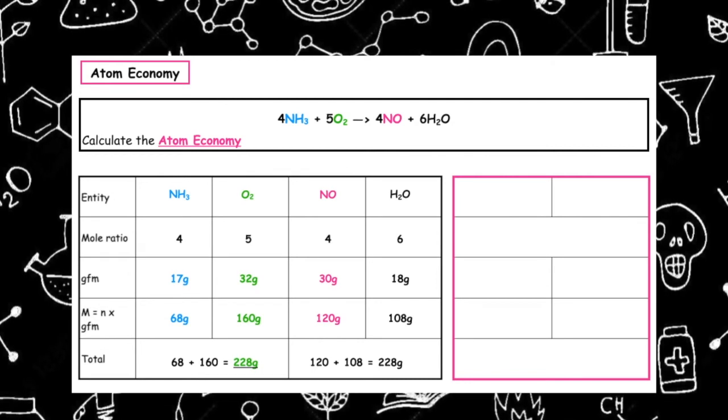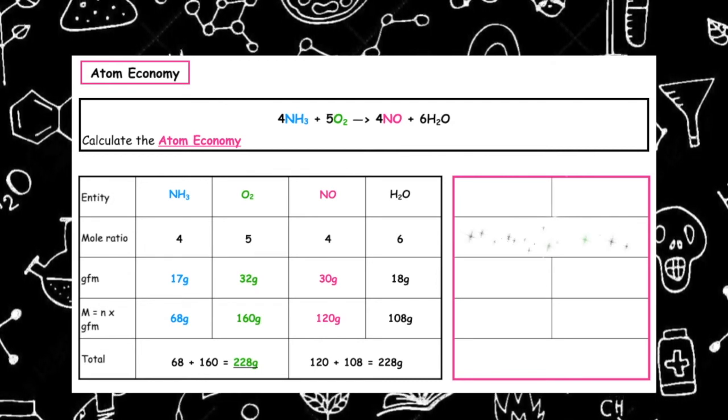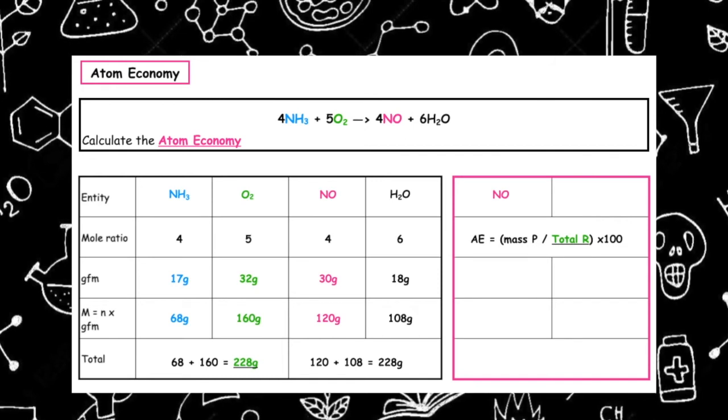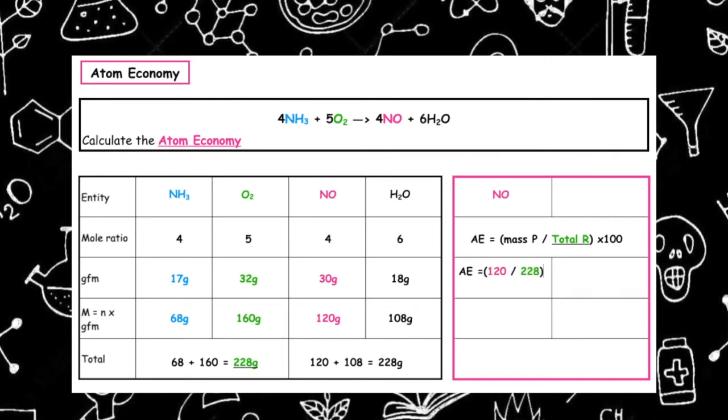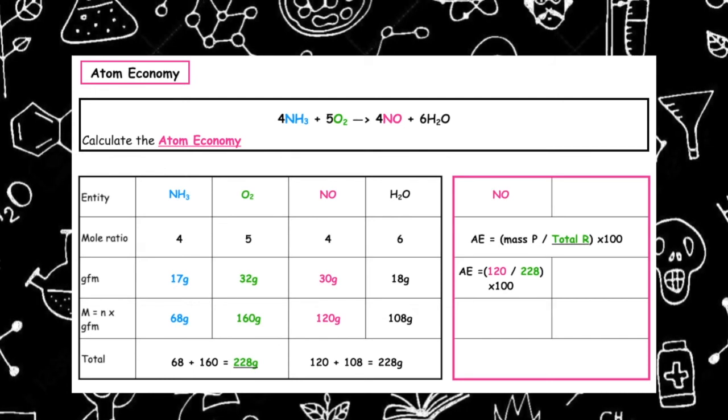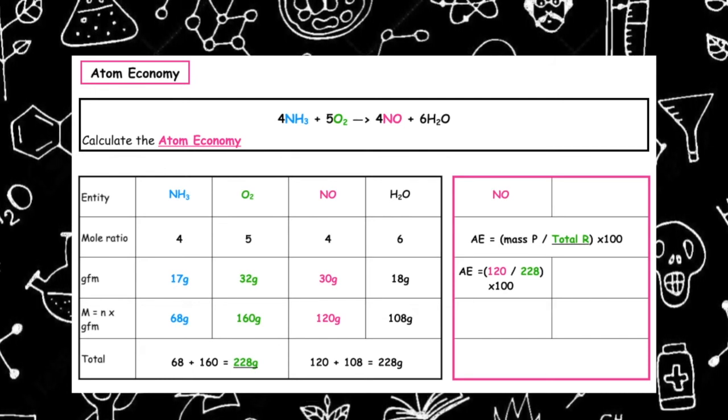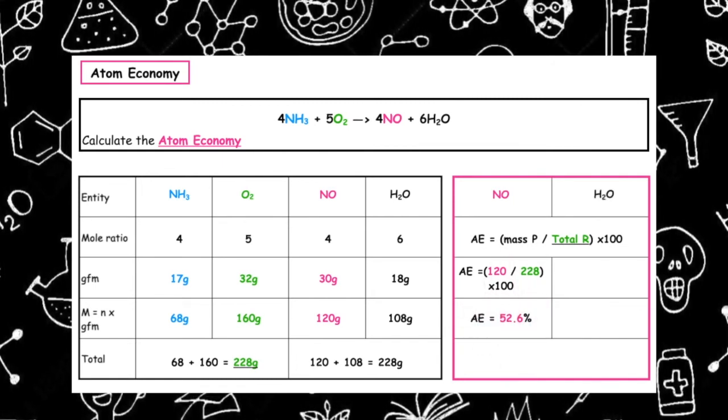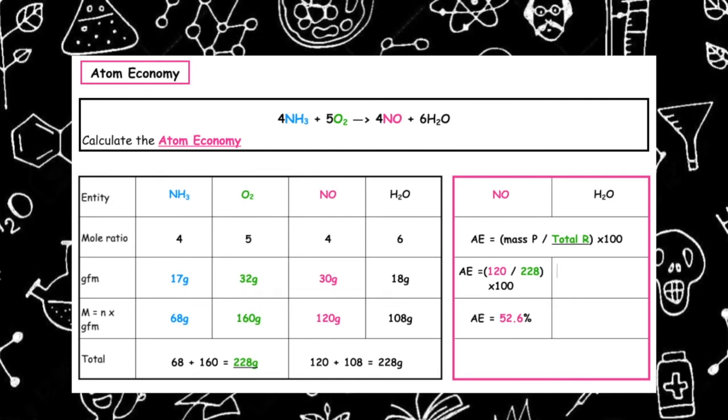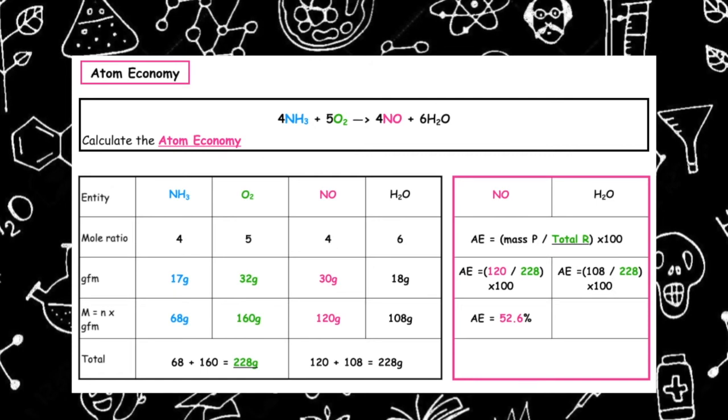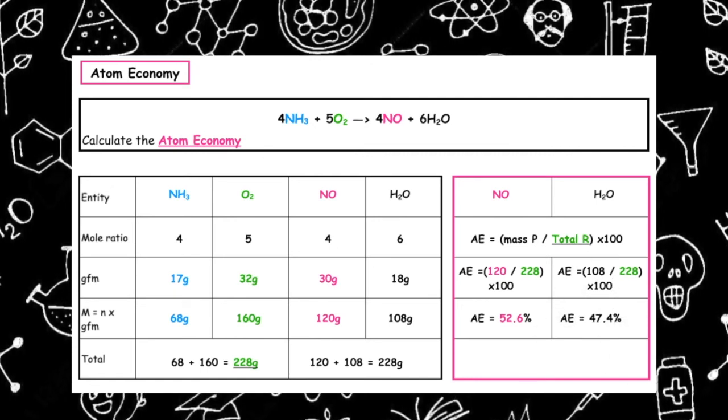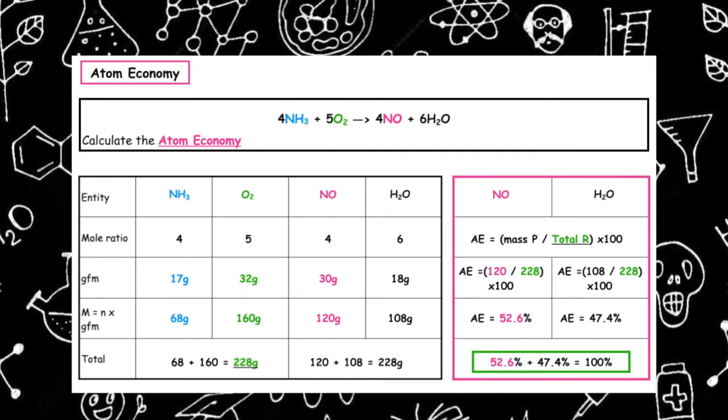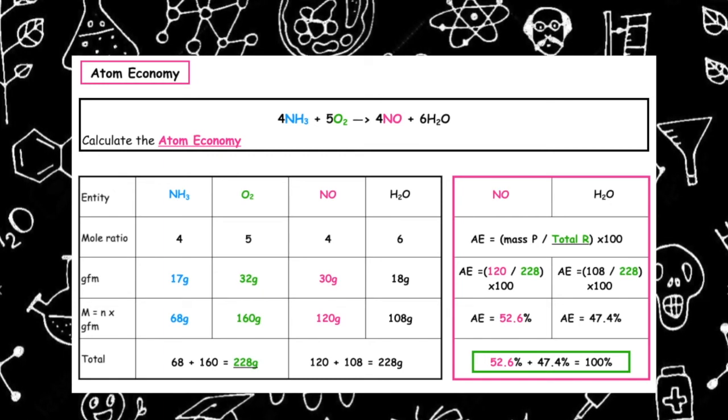We then want to work out the atom economy, so we write out our formula: mass of product over total reactants times 100. If we're working this out for our nitrogen monoxide which is NO, we have a mass of 120 over the total reactants which we worked out as 228 multiplied by 100, which gives us an atom economy of 52.6. To double check, we'll do the same with the water. We've got 108 divided by 228 multiplied by 100, which gives us an atom economy of 47.4. Again we can double check by adding those up. 52.6 plus 47.4 gives us a total of 100%.